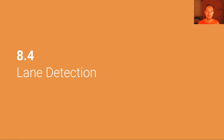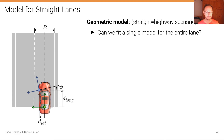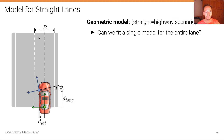For the purpose of illustration, we are going to consider a very simple model — a linear road model. Of course, such a model does not apply everywhere, but it would apply for example to driving straight on a highway. The model for straight lanes is a geometric model that models the highway scenario where the own lane is delimited on the left and right side by lane markings. The question is: can we fit a single model for this entire lane?